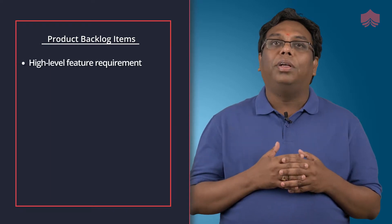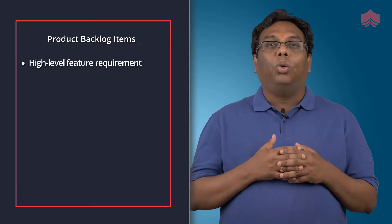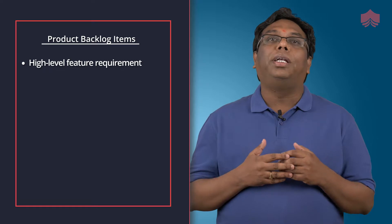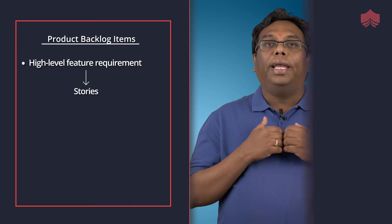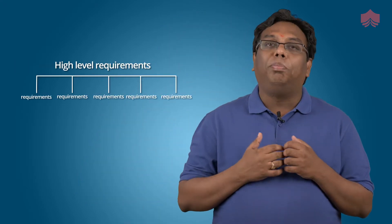A high level requirement of each and every feature will be further broken down into something called stories. In agile, we say that we capture the requirements in the form of user stories. We break down the high level requirements into smaller pieces of requirements which can be developed, tested, built, and ready to be deployed in any given iteration.